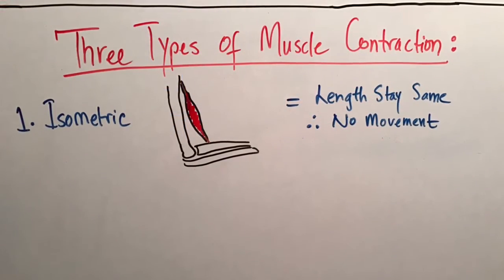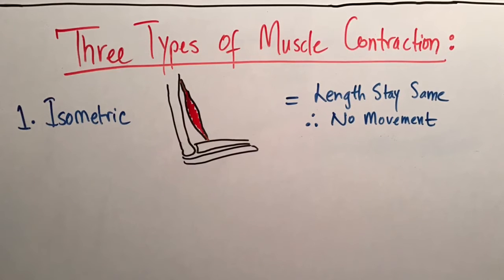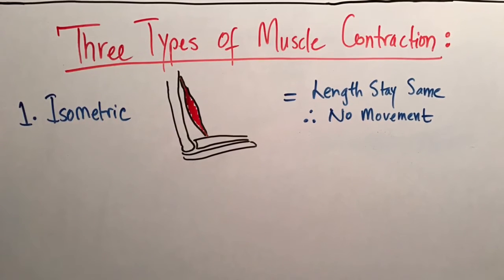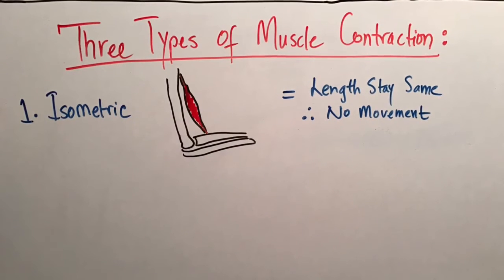A muscle generates isometric force when its length does not change. That is, the load and contractile force are equivalent.